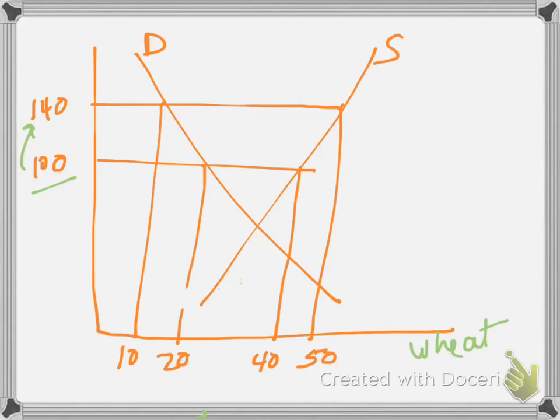And then we have the patterns of supply and demand given, where the export subsidy supply goes up to $50, and demand goes down to $10. So we want to calculate the welfare effects of this export subsidy.